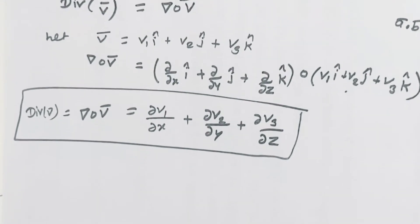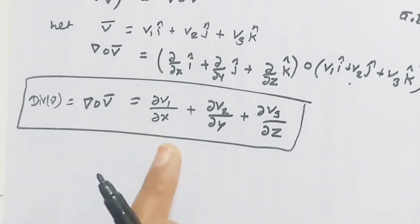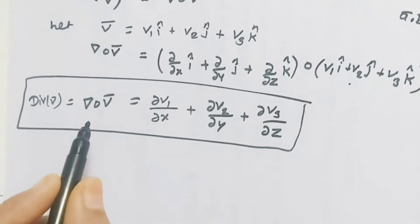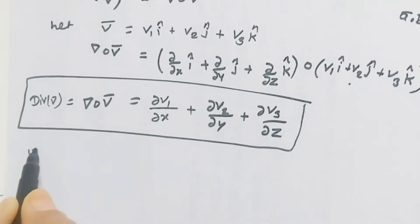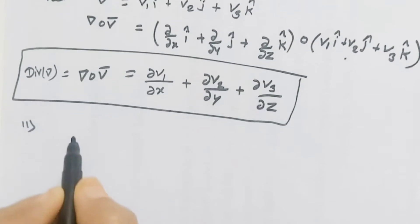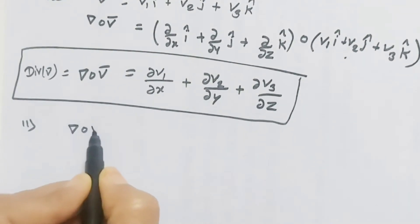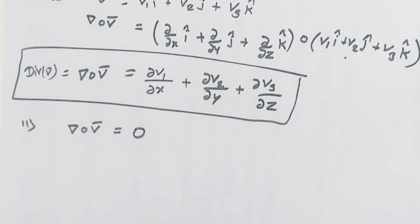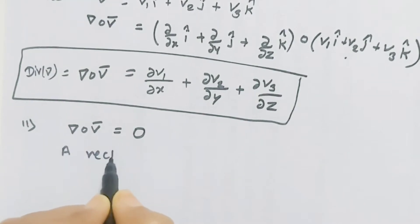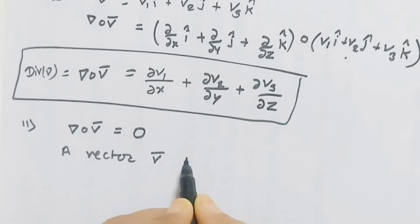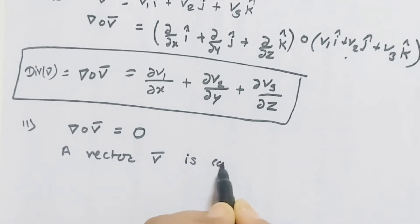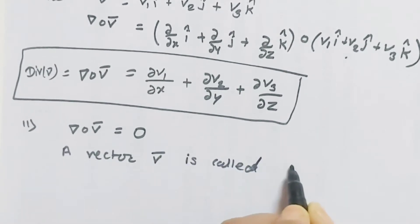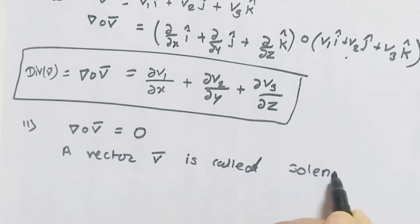Sometimes we may get delta dot v-bar equals to zero. If delta dot v-bar equals to zero, then we can say that vector v-bar is called a solenoidal vector.